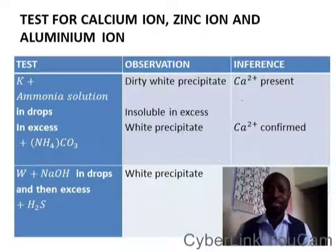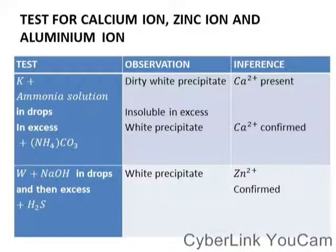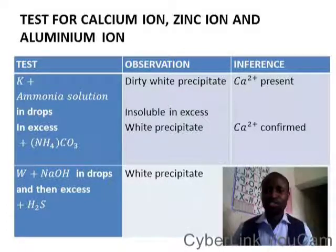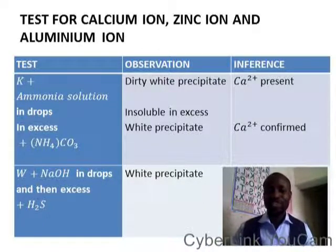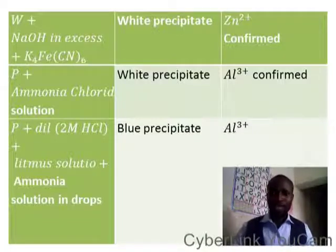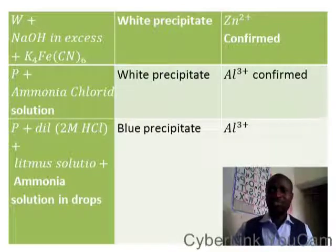Now W plus NaOH in drops, then in excess, then plus HCl — there will be a white precipitate which is soluble in HCl. As soon as you add HCl to it, that confirms the presence of zinc.